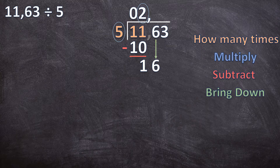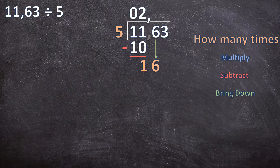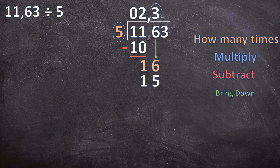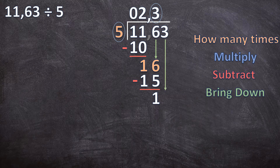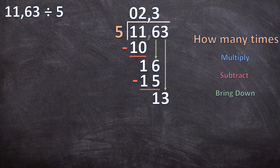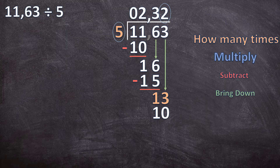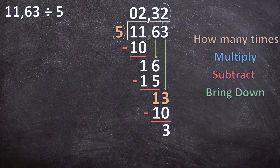Our steps start again. How many times can 5 go into 16? Three times. Multiply: 3 times 5 is 15. Subtract: 16 minus 15 is 1. Bring down the last digit — the 3. How many times can 5 go into 13? Two times. Multiply: 2 times 5 is 10. Subtract: 13 minus 10 is 3. Now we bring the next digit down, but there's no other digit to bring down and we didn't end exactly at zero.